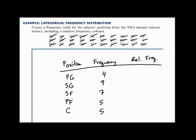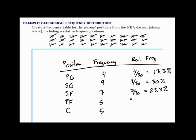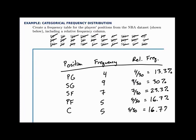For relative frequency, divide each frequency by the total number in the sample — 30. So point guards: 4 ÷ 30 ≈ 0.133 or 13.3%. Shooting guards: 9 ÷ 30 = 30%. Small forwards: 7 ÷ 30 ≈ 23.3%. Power forwards and centers: 5 ÷ 30 ≈ 16.7% each. A frequency table is straightforward — just count how many fall into each category, which in this case were the positions of the players.